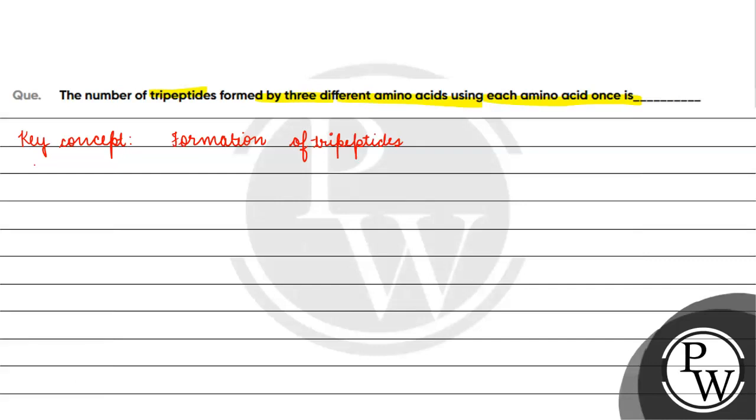Now peptide bond का formation होता कैसे है। एक amino acid का N-terminal यानि amino group और दूसरे amino acid का C-terminal.